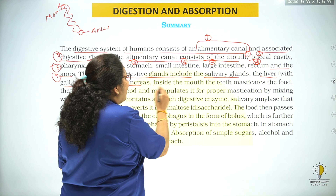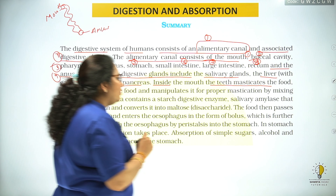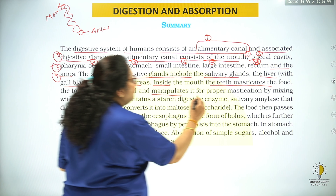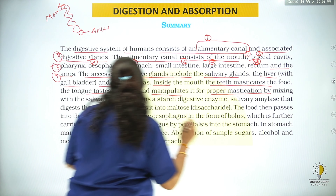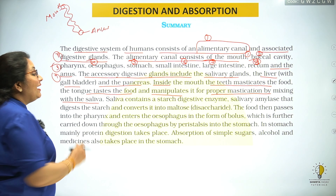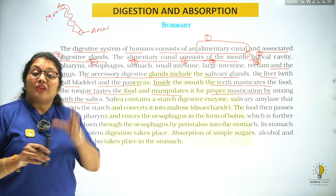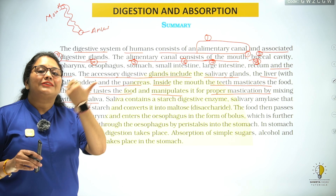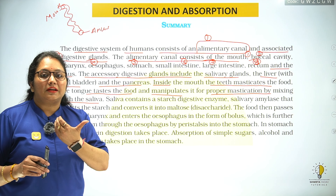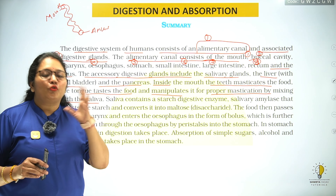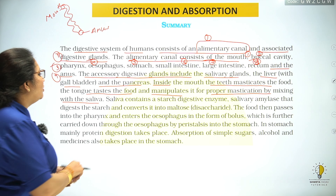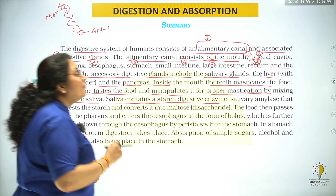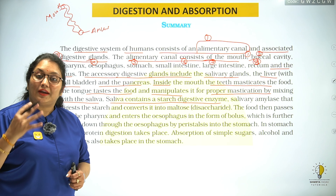Inside the mouth, the teeth masticate the food and the tongue tastes the food and manipulates it for proper mastication by mixing it with the saliva. The saliva contains a starch-digesting enzyme.